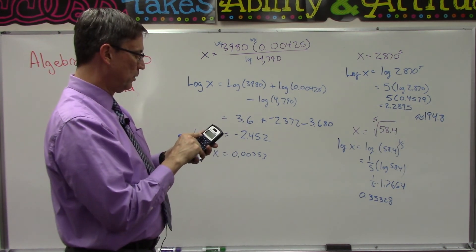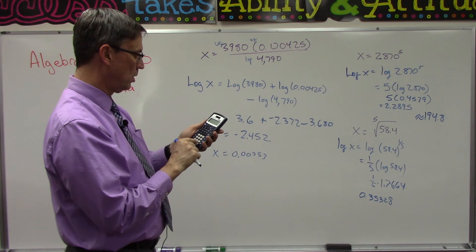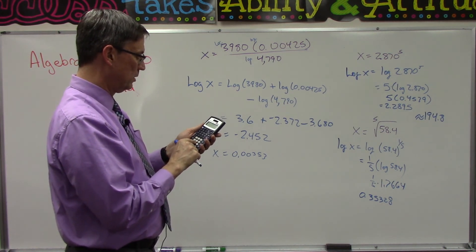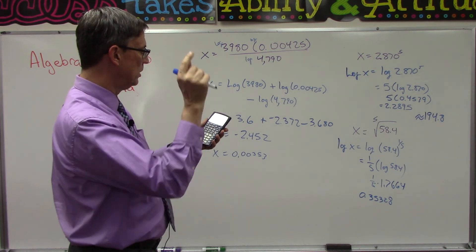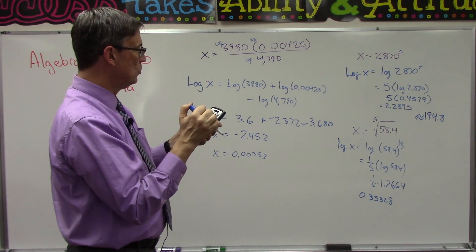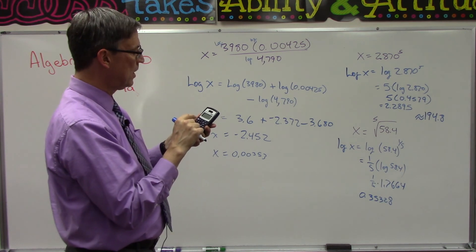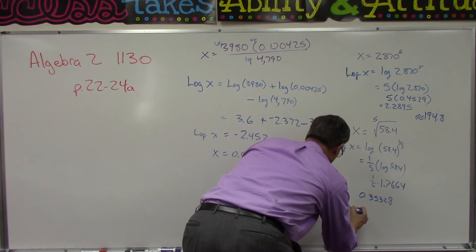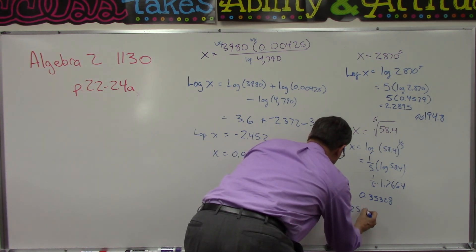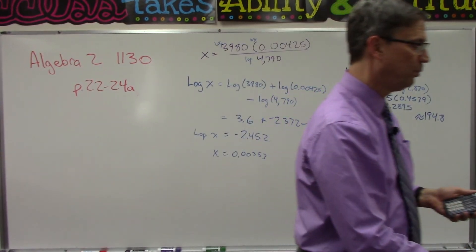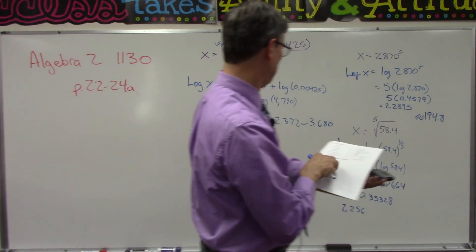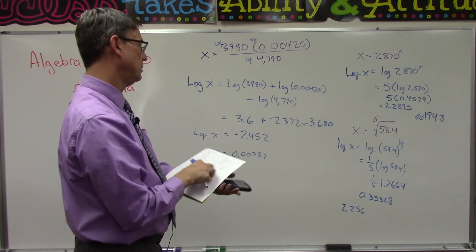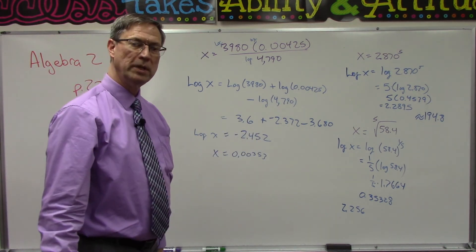And now we'll use that as our exponent. So second function log of 0.35328, enter: 2.2556. So I'll just write down 2.256, took it out to four places. Let's see what they got—they have approximately 2.26. Yay, we did one better! We could have taken it further with our calculator.